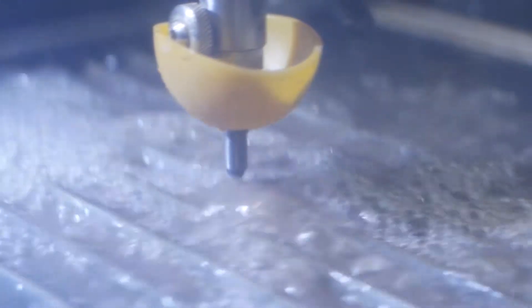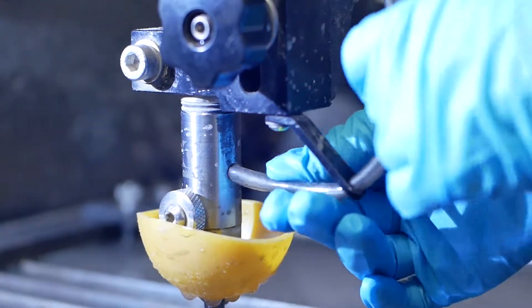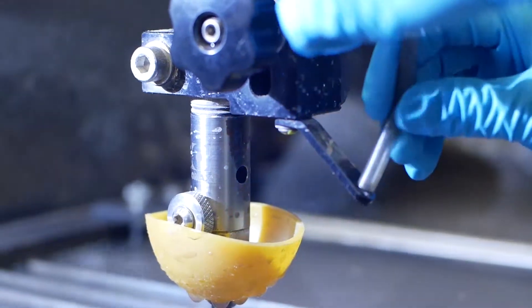After cutting, the nozzle must be flushed again in preparation for the next user. Remove the garnet sand feed tube and invert the nozzle splash guard.